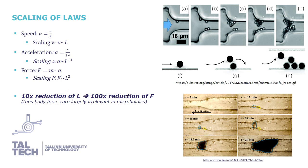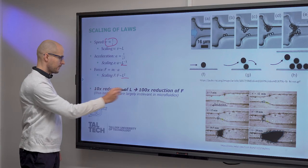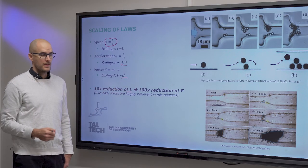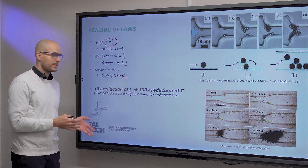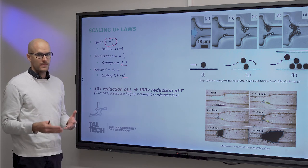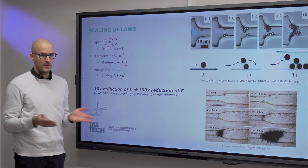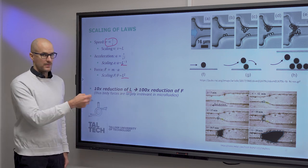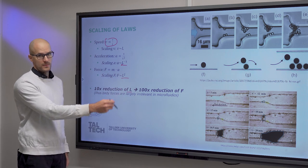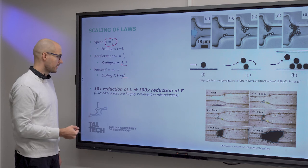So the scaling of different physical laws. First of all, speed scales linearly. Acceleration scales inversely proportional to the length. And forces scale to the square. What this means is 10 times reduction of the characteristic length, which you can imagine as the length or width of the channel, the minimum dimension of your channel, the length of your cross section and so on. 10 times reduction of the characteristic length means 100 times reduction of forces applied to the volumes inside your system.